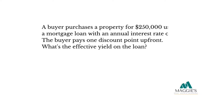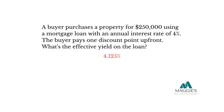Now let's tackle the concept of effective yield. A buyer purchases a property for $250,000 using a mortgage loan with an annual interest rate of 4%. The buyer pays one discount point up front. What's the effective yield on the loan? The effective yield on the loan is 4.125%. This figure takes into account the payment of discount points, any applied discounts, and the duration of the loan.